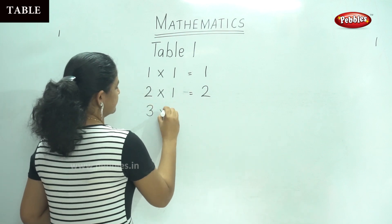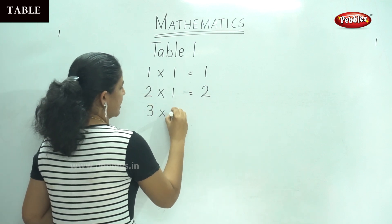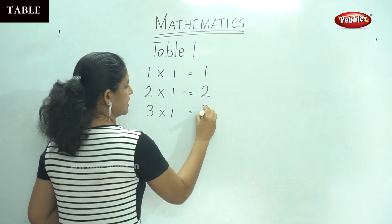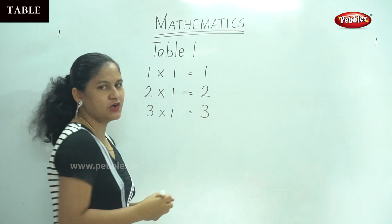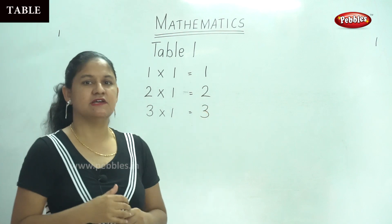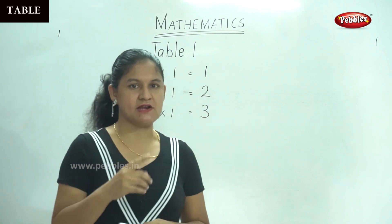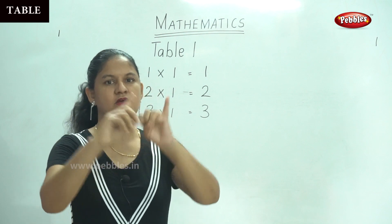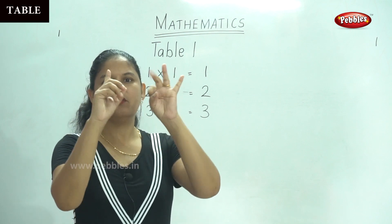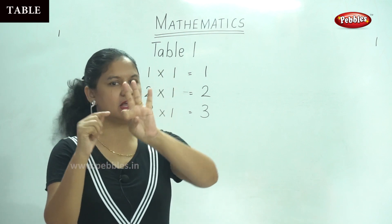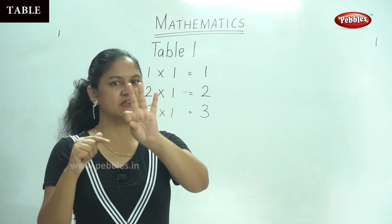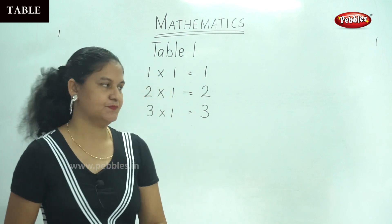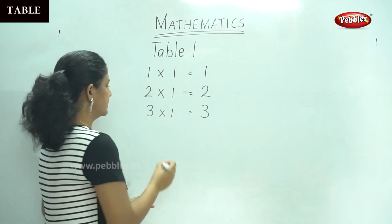3 times 1 gives you 3. We are going to count 1 three times: 1, 1, 1. When we count it 3 times it gives us number 3.